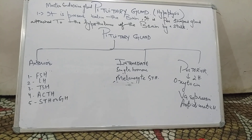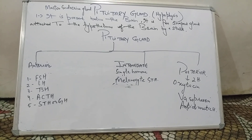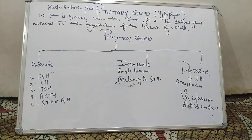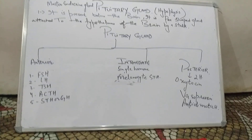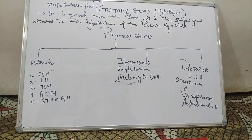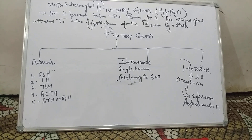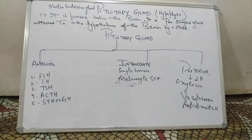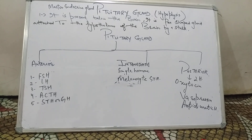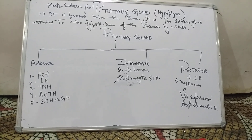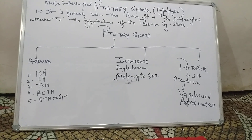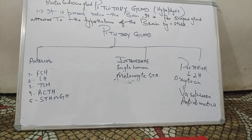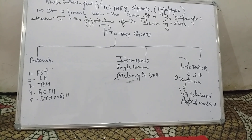Hi students, hope you are fine. I'm Samreen. Today we come on the topic of the pituitary gland. The pituitary gland is also called the master endocrine gland because it controls the function of other endocrine glands. It is present below the brain.